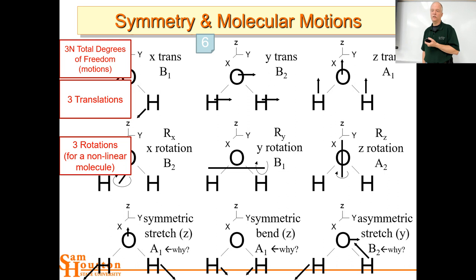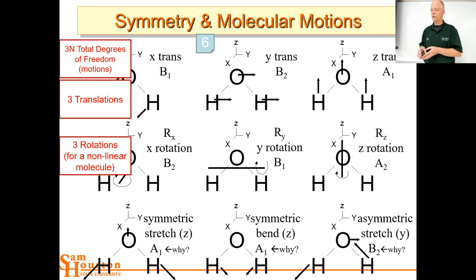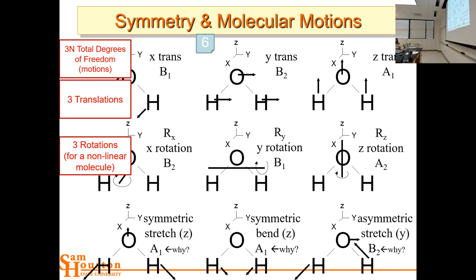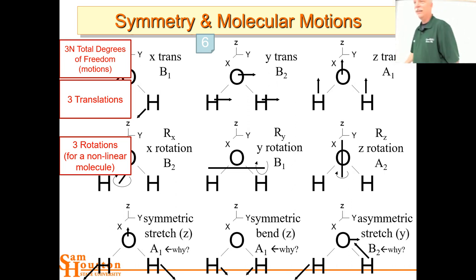For water we have three rotations, and for a nonlinear molecule we have three rotations — write that down. We have only three things that an object can rotate: it can spin around the Z axis, spin around the Y axis, and go around the X axis. That's a roll, a cartwheel, or a spin. That's three rotations for a nonlinear molecule.